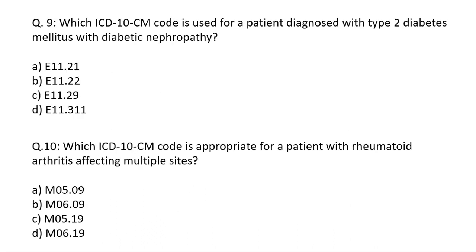Question number nine: Which ICD-10-CM code is used for a patient diagnosed with type 2 diabetes mellitus with diabetic nephropathy? Think your answer. Question number ten: Which ICD-10-CM code is appropriate for a patient with rheumatoid arthritis affecting multiple sites? Take your time and think your answer.